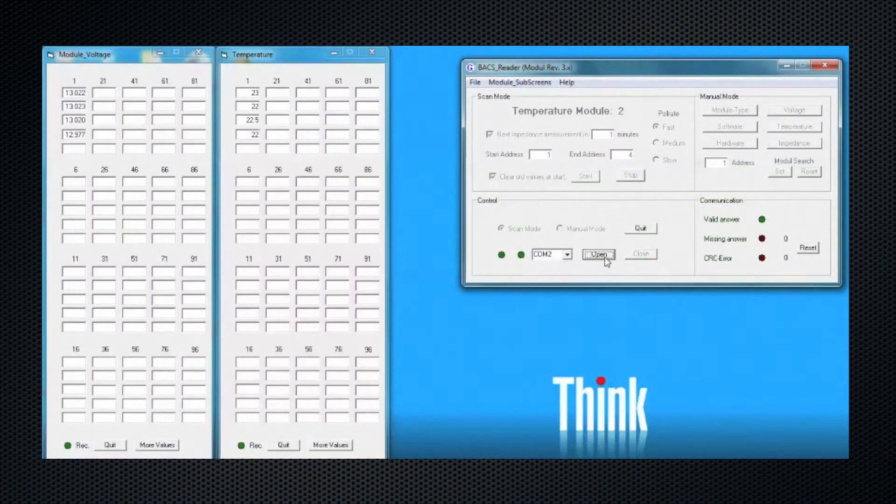Using the Bax reader, you enter the start and end address of each module. The Bax reader will pull through voltages and temperatures and show transmit receives for each value. Once you get valid answers, you can stop the reader.